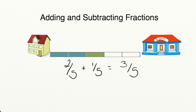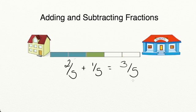When you're adding a fraction that has a like or common denominator, you can add the numerators to get your answer. Since our pieces are all fifths, they're all the same size. We just need to add how many pieces we have in all. We have two plus one equals three for our numerators, and our denominator is going to stay the same — we're going to keep fifths because the size of our pieces aren't changing. So when you're adding fractions that have the same denominator, you're going to add the numerators and keep the denominator the same.